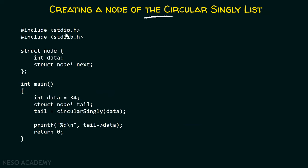Here is the program. You can see two standard libraries are included. We have a struct node which consists of data as well as the next part, which is very similar to Singly Linked List. In the main function, we have a data variable which stores the value 34, and we have a tail pointer. We are calling the circularSingly function and passing data — that is the value 34 — to it.